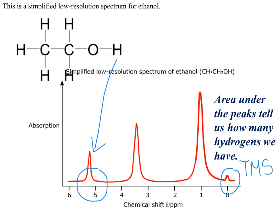Now considering the other two groups of chemically equivalent hydrogen atoms — we had the green hydrogen atoms, which are the two hydrogen atoms in the middle of ethanol. These two hydrogen atoms are attached to a carbon, but that carbon is itself attached to the electronegative oxygen. So their chemical shift is going to be affected — not as much as the blue hydrogen — but still affected by the deshielding effect of this electronegative oxygen. These two hydrogen atoms are responsible for causing the peak at a chemical shift of between 3 and 4 parts per million.